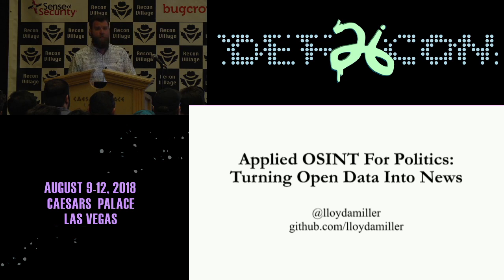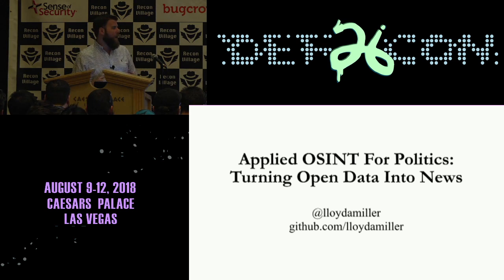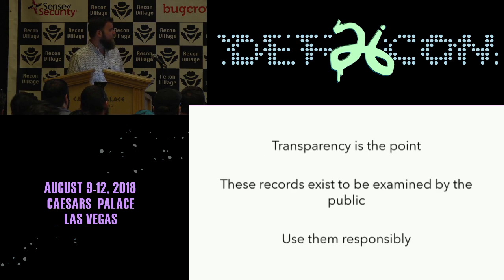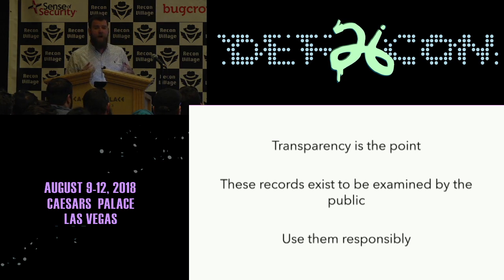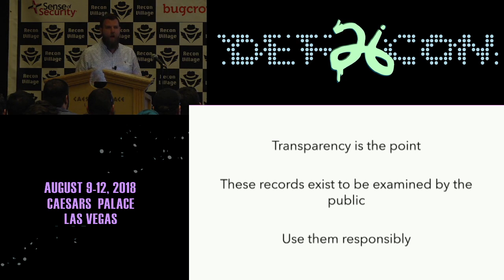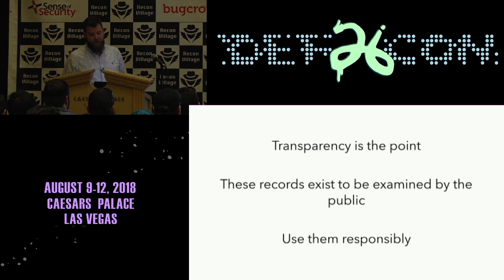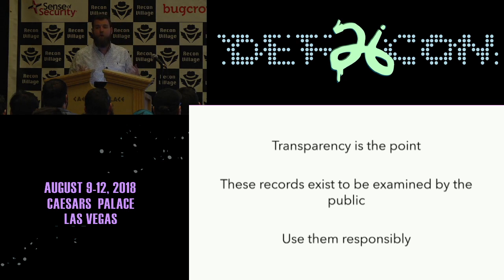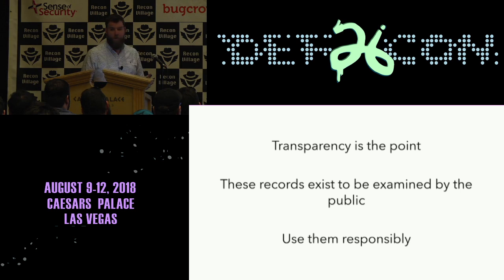Before we get into the meat, I want to talk a little bit because there are going to be a lot of documents I'm going to discuss that are publicly available and will have a lot of information that people might think is a violation of privacy. The first thing I want to emphasize is transparency — that's the point of these documents. They are public because the public has a right to view them. When we're talking about the finances of an elected official, the public needs to be able to see that so they can trust that their elected officials are making decisions in the best interest of their constituents. Use this information responsibly — I don't want anybody to do anything malicious that someone could use as justification to restrict access to these documents.